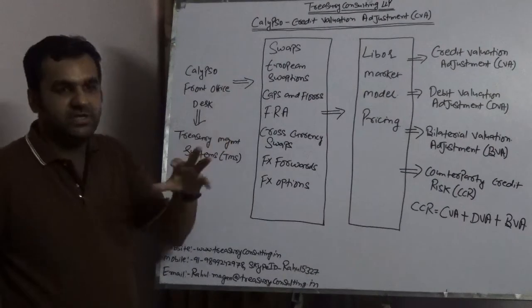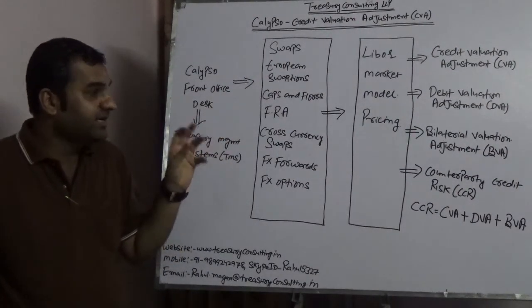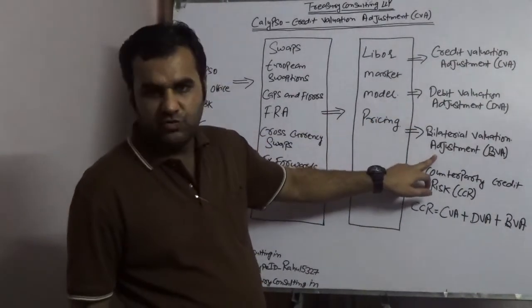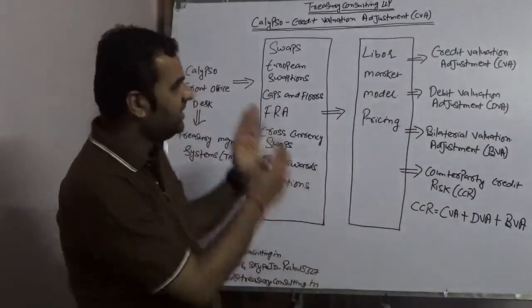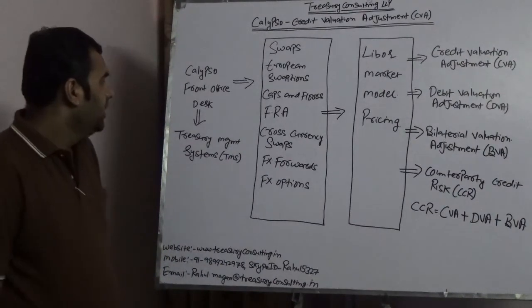The board is a little short, so the heading says credit valuation adjustment, but technically we would be covering DVA, which is debt valuation adjustment, and BVA, which is bilateral valuation adjustment, and CCR, which is counterparty credit risk—everything which we cannot mention in the title.